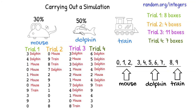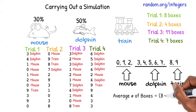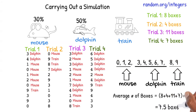Once we finish our trials, we can calculate the average of all our results to answer the question: how many boxes of cereal are needed to get all three toys? We add our answers and divide by four — the number of trials — and get 7.5. Based on the results of our simulation, 7.5 boxes should be opened to collect all three toys. But since we cannot open half of a box, let's round up to eight. The more trials we conduct, the better our answer will become. For the sake of time, I only conducted four trials, but I would recommend conducting at least 20 trials in a similar investigation.